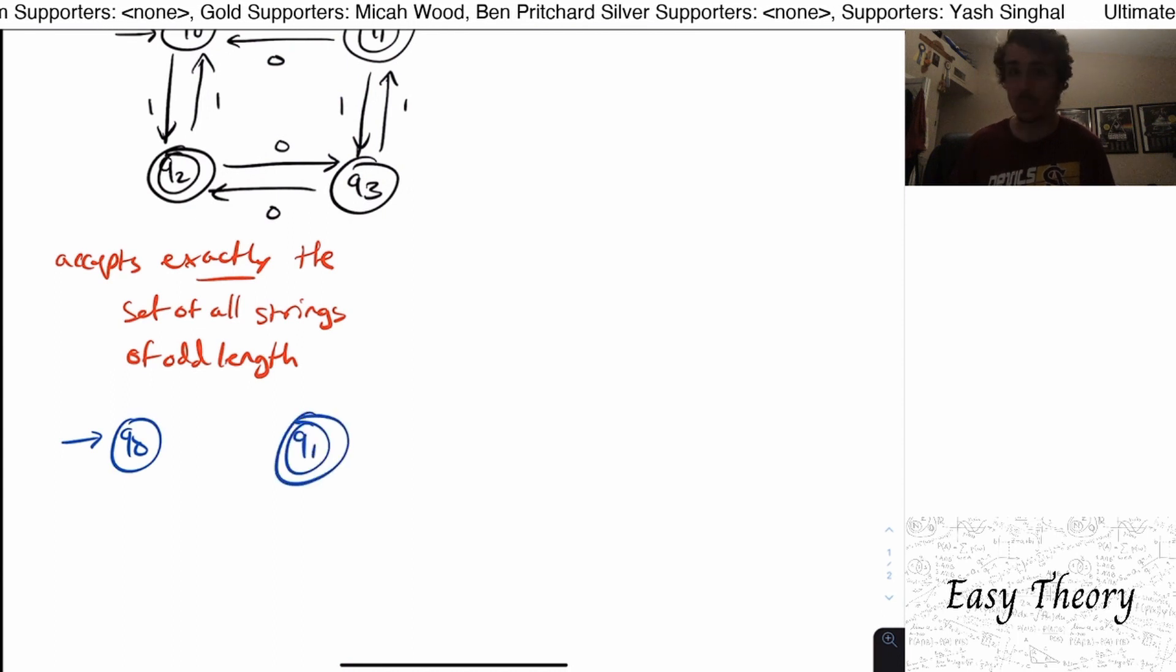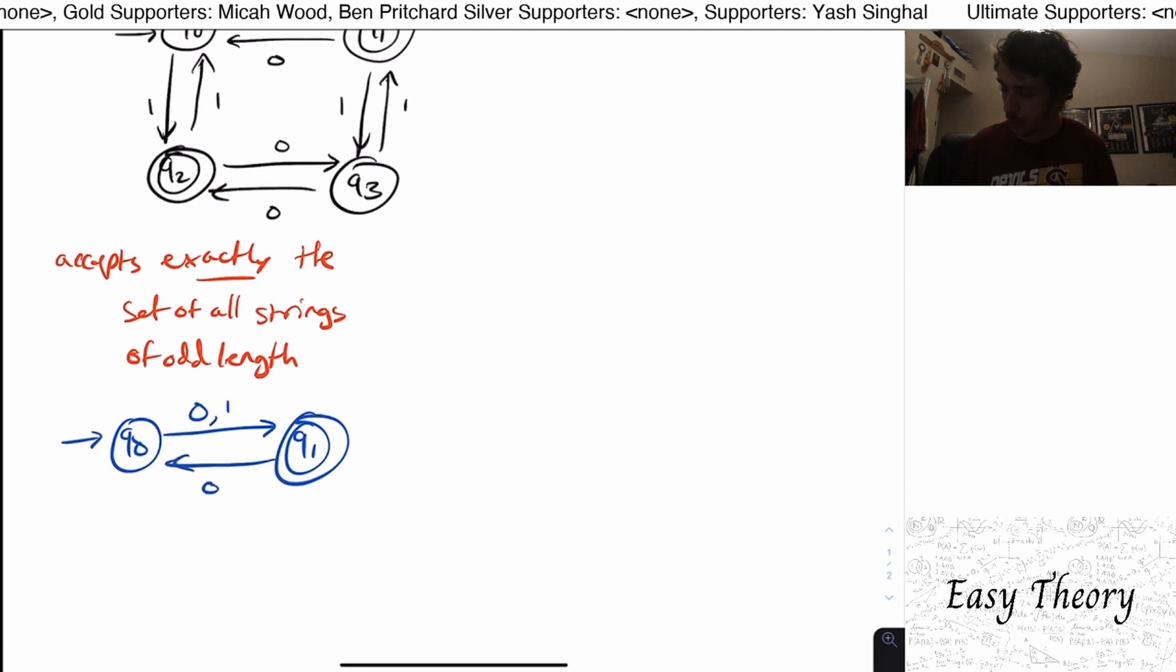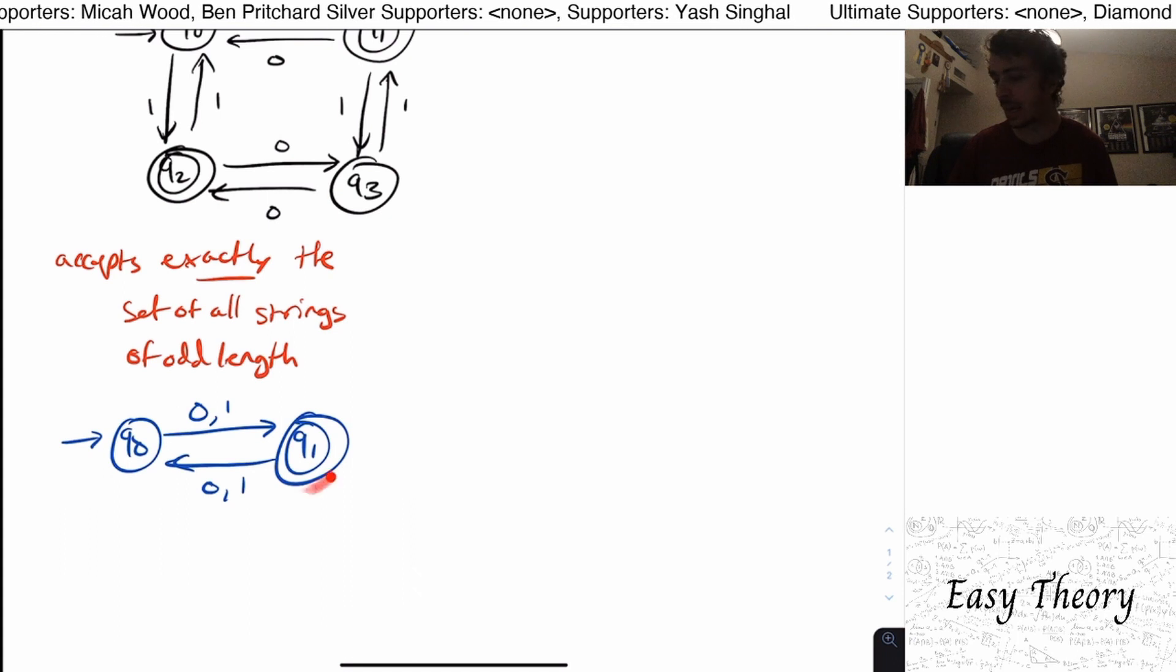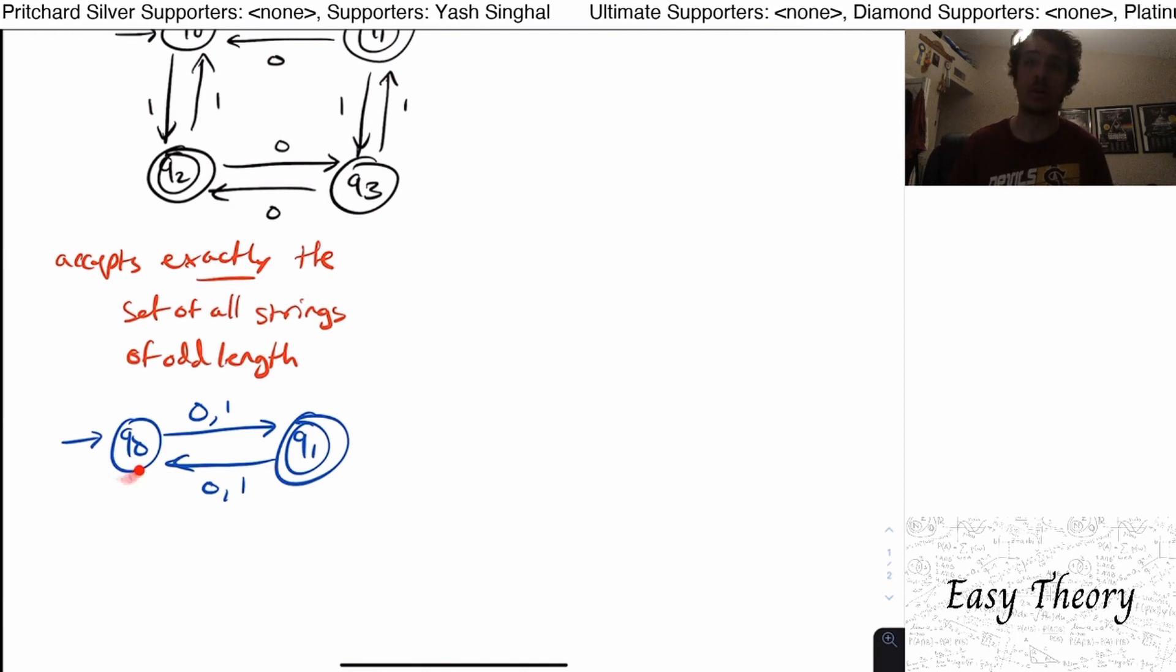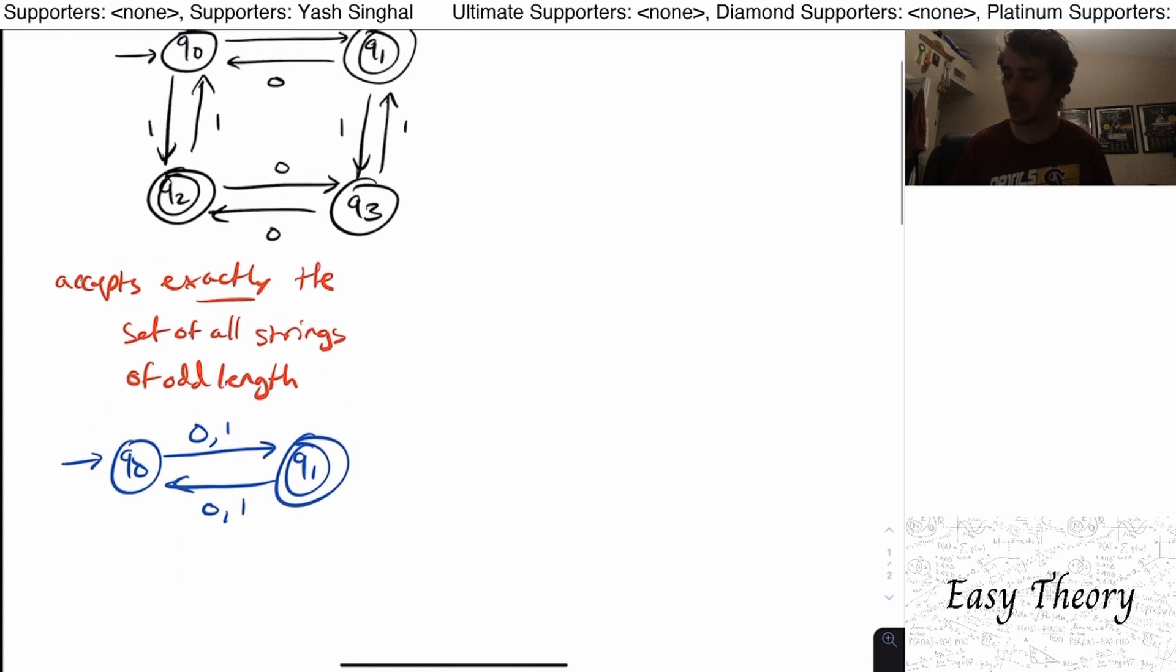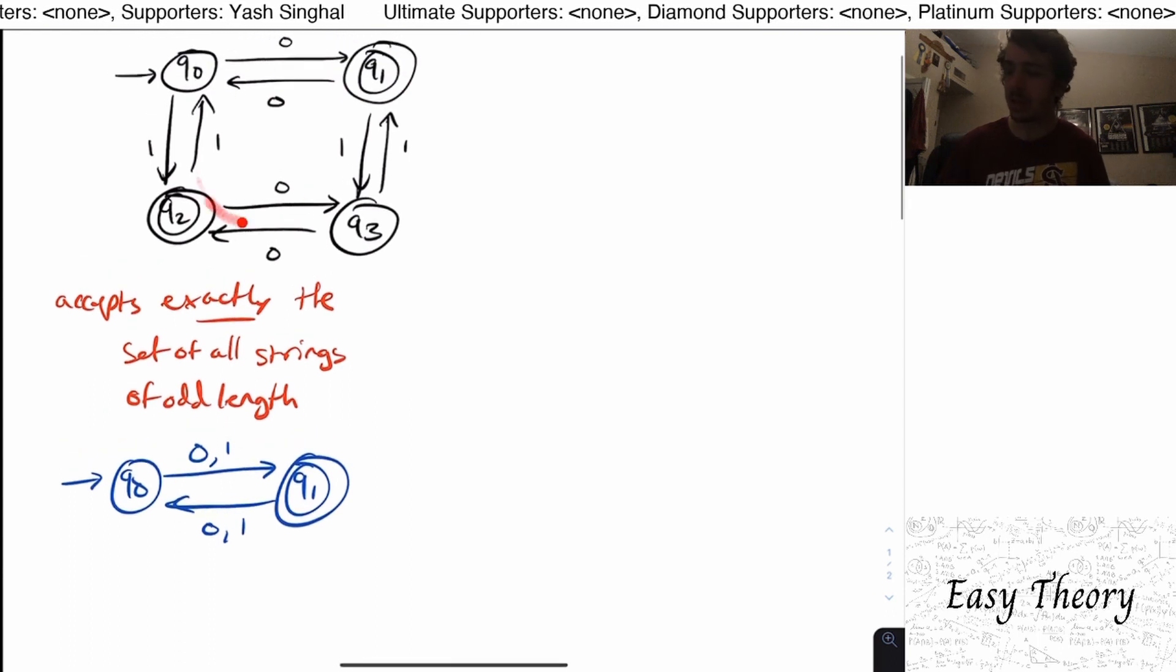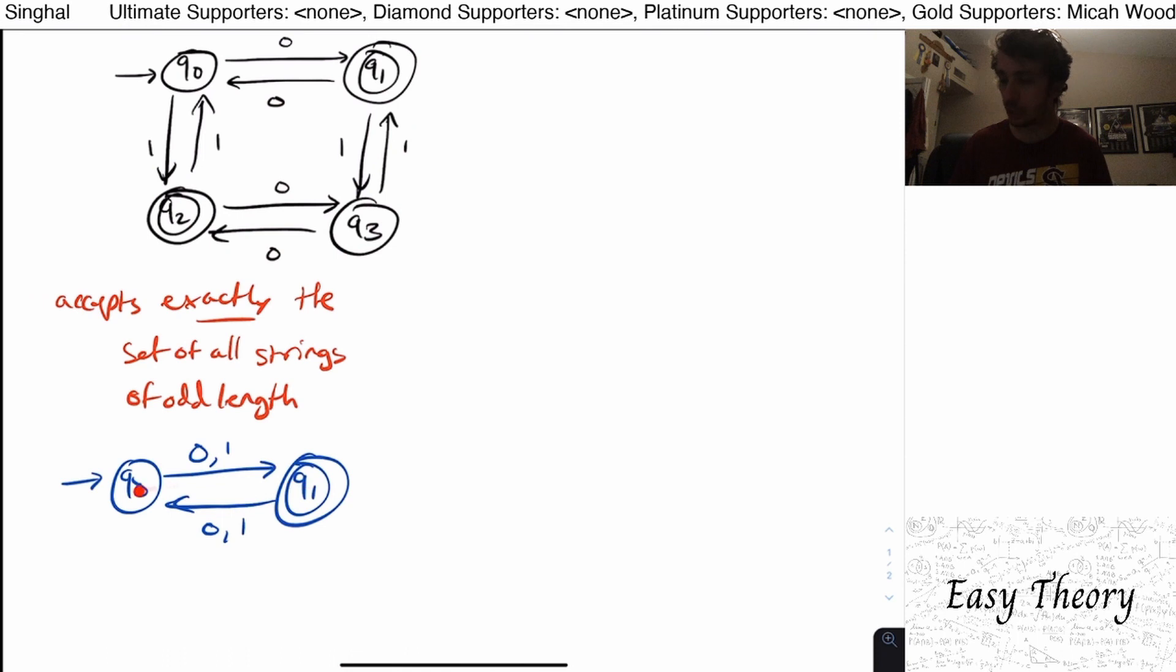So we can actually make a really simple machine for this. And it's really similar to the one that we saw before. So here, instead of having the start state being the final state and q1 not be the final state, I just flipped which one was final. When we had q0 was final, that was the set of all even length strings. But here we want odd length strings. So the answer is yes, there is a simpler DFA, a machine that we'll be talking about here called the DFA, which has two states right here.